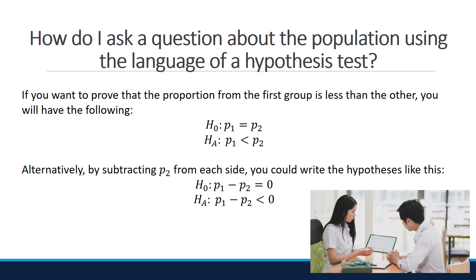The inequality in the alternative hypothesis is determined by what type of comparison you would like to make. If you want to prove that the proportion from the first group is less than the other, under the null hypothesis you have the two population proportions equal to one another, and under the alternative you will have p₁ less than p₂. Alternatively, by subtracting p₂ from each side, under the null the difference is equal to 0, and under the alternative the difference is less than 0.